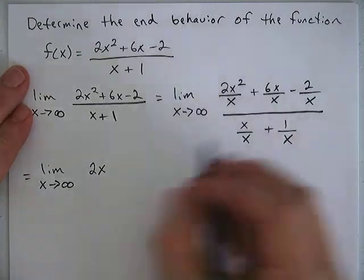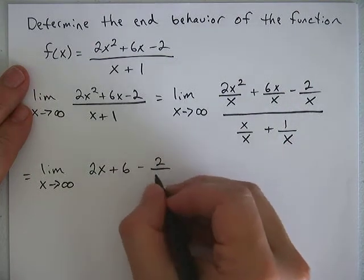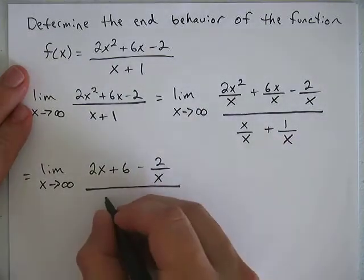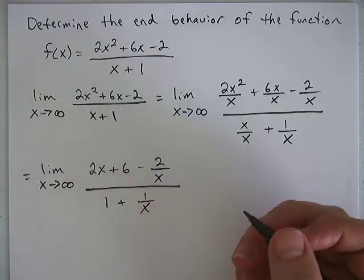This term, the x is cancelled, so plus 6, and then minus 2/x. That one doesn't change. Divided by x/x is 1 plus 1/x. So did that help us at all?